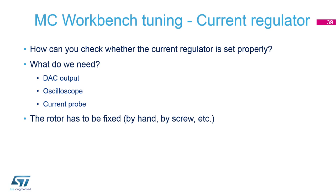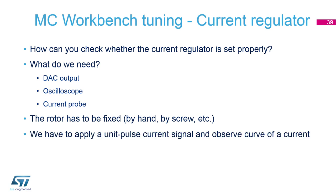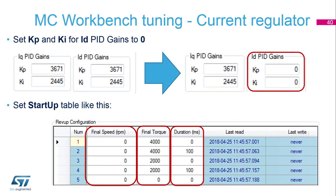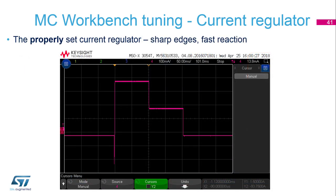A useful practice is to fix the rotor by hand or by fixing the load. We apply a unit pulse current signal and observe the resulting current curve. To do this, go to the monitor and set KP and KI initially to zero on the ID PI regulator, set up the startup table as depicted, and launch the motor. Then observe the current regulator response via the oscilloscope on the current probe and on the DAC outputs.